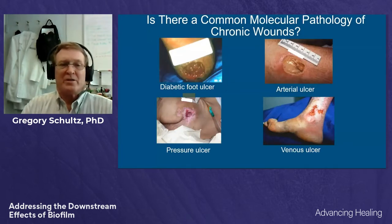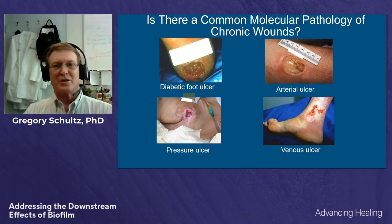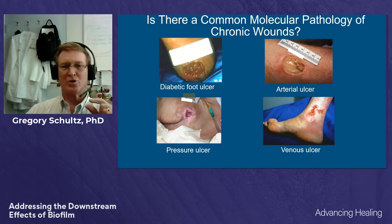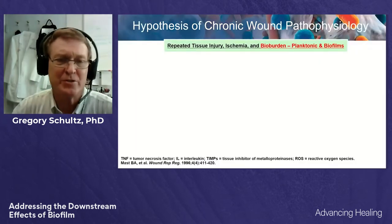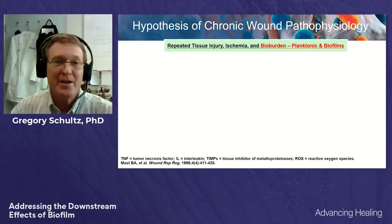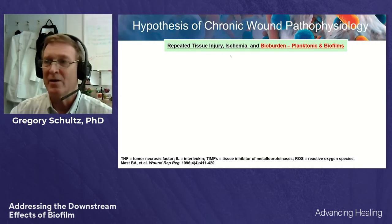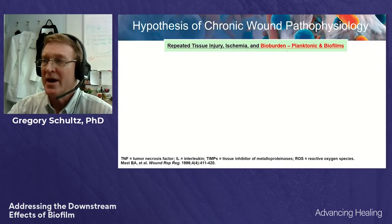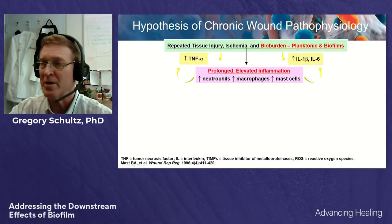What's happened in the four types of typical chronic wounds? Despite huge differences in underlying comorbidities and etiologies, there appears to be a common molecular pathology. Data from multiple publications worldwide indicate a common wound pathophysiology: some form of repeated tissue injury combined with ischemia, and now we appreciate a component of bio-burden — both planktonic single bacteria and biofilms.